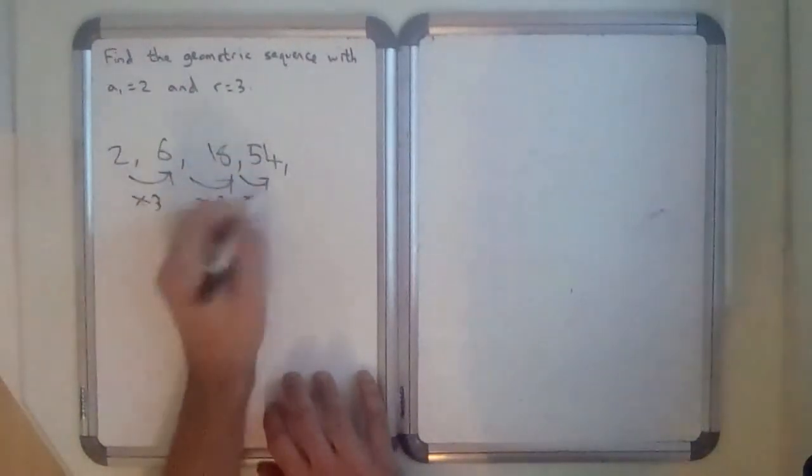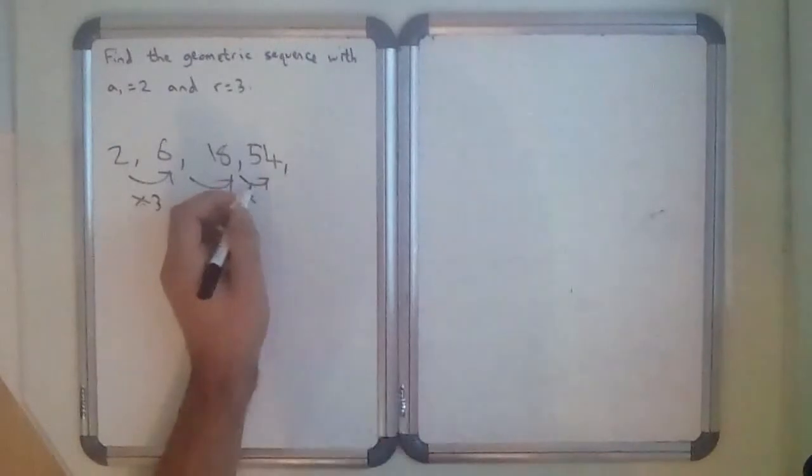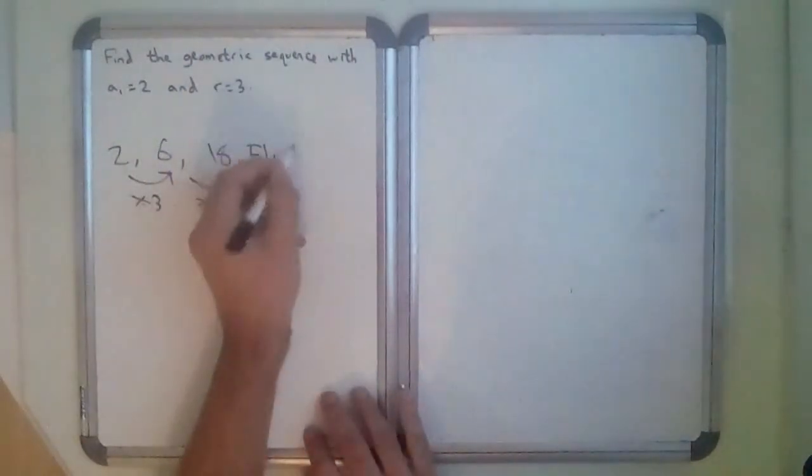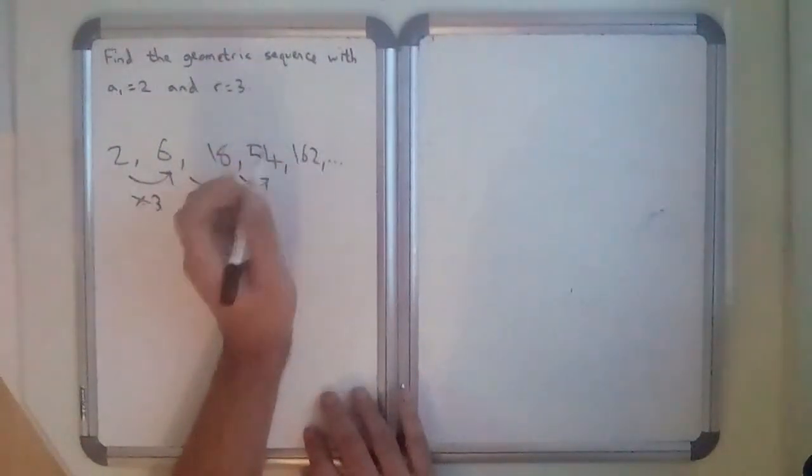3 times 54 is 3 times 50 plus 3 times 4. It must be 150 plus 12, 162, and so on, right?